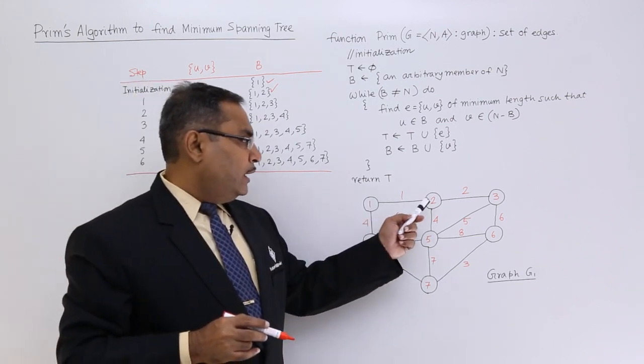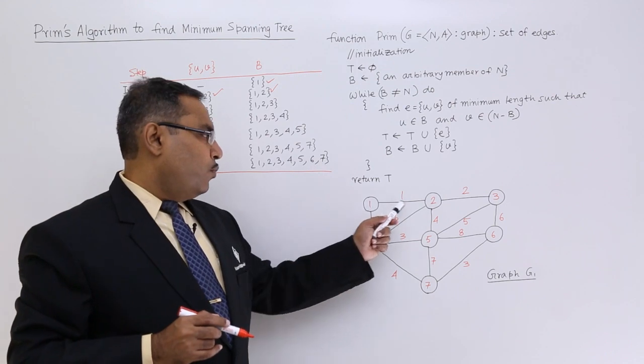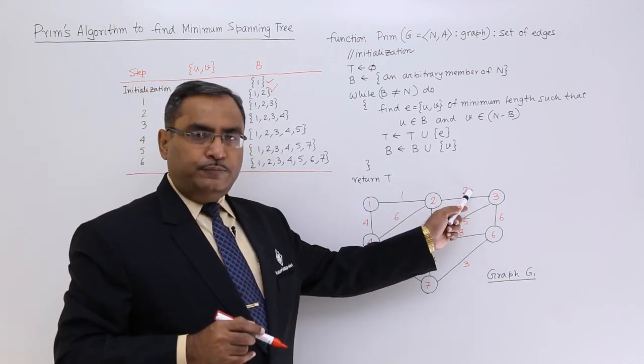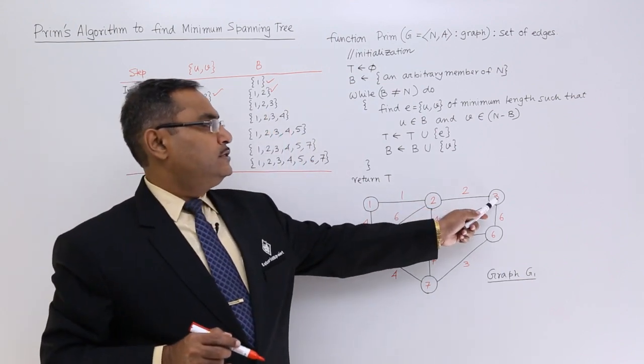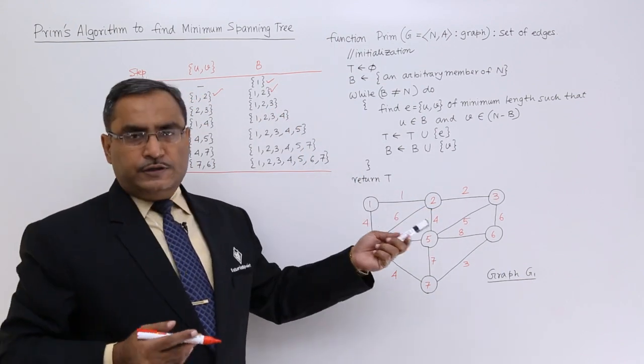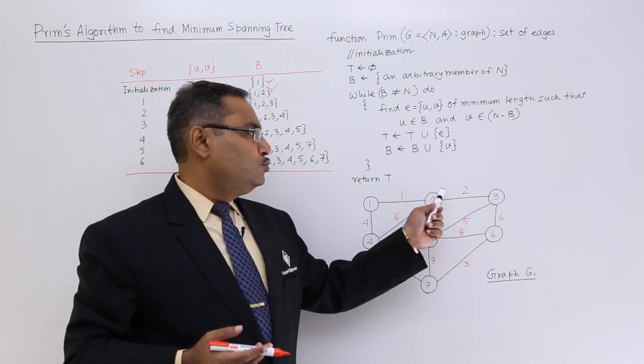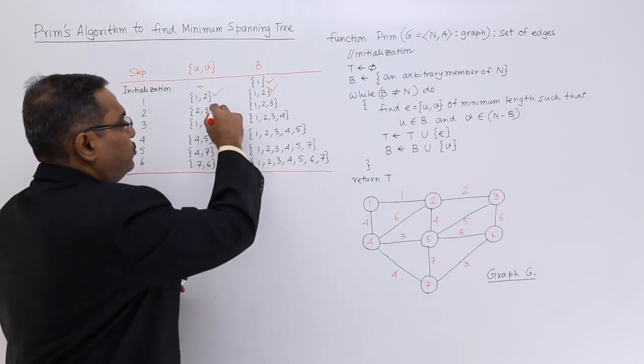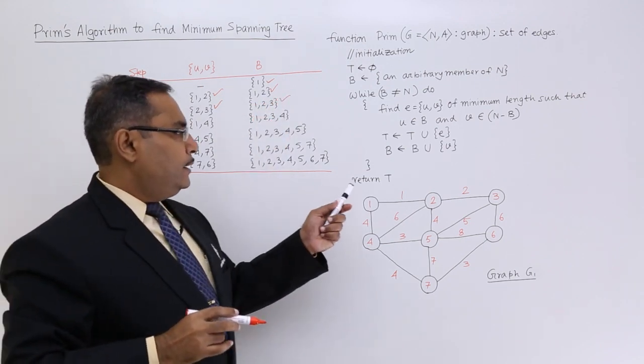Next, from 1 and 2, what is the minimum edge we are having? From 1 and 2, we are having edge 2-3 with the weightage of 2. You see, 2 is included in b, but 3 is not included in b. Obviously, 3 is in n, so that is why we should consider this one. The next edge will be 2-3, and this 3 will be union with b.